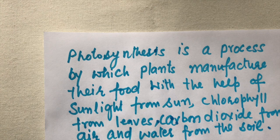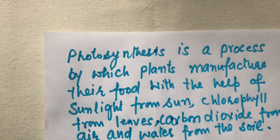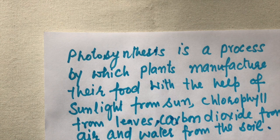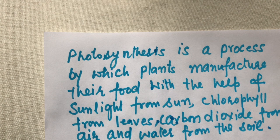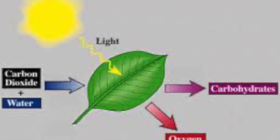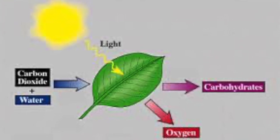The food manufactured is stored in the leaves and supplied to all parts of the plant. The food is also stored in the form of fruits, in the roots, and in the stem — all of which we eat. This is all about photosynthesis. If you like the video, please comment, share it, and subscribe to my channel. Thank you.